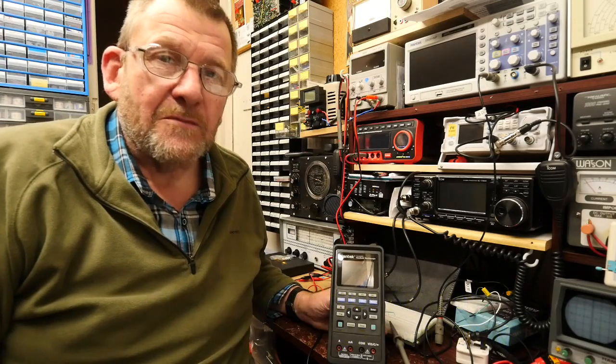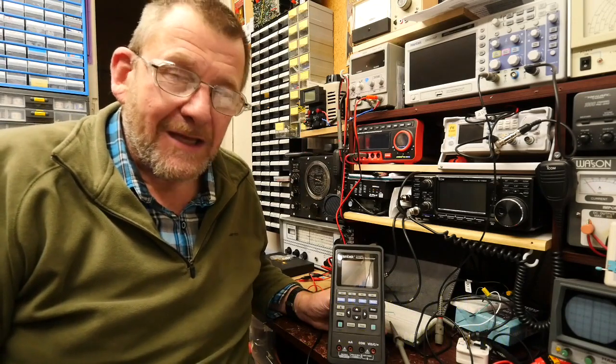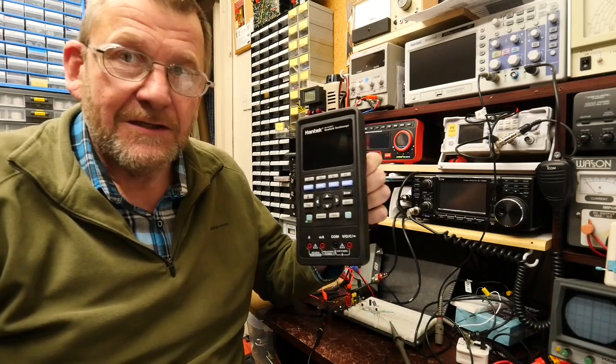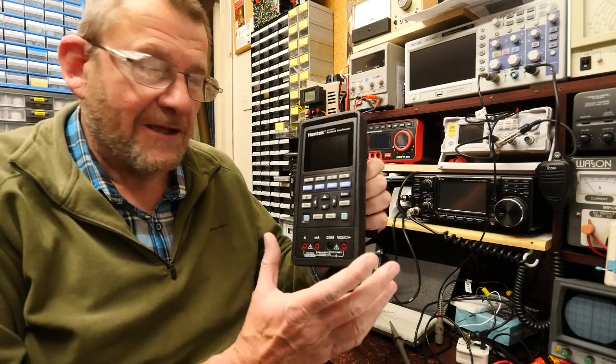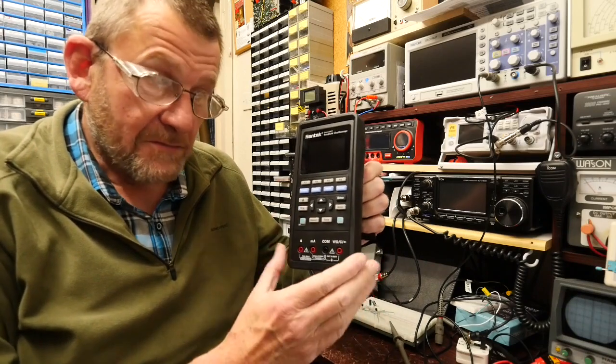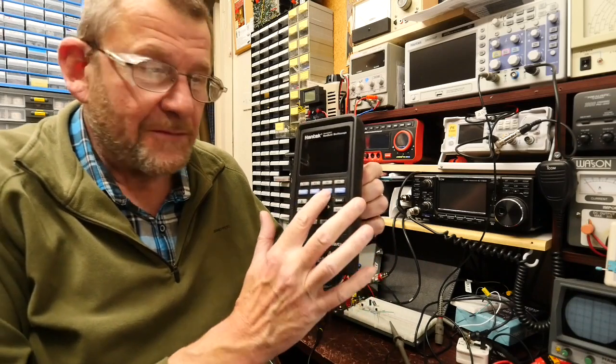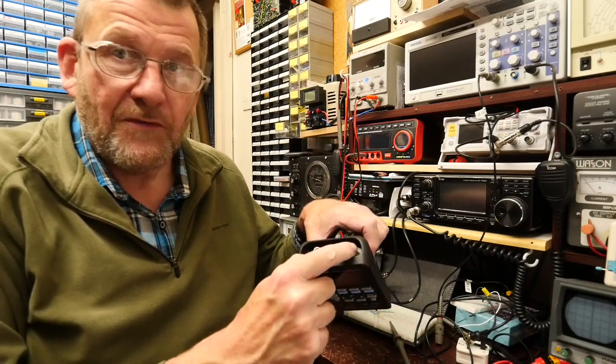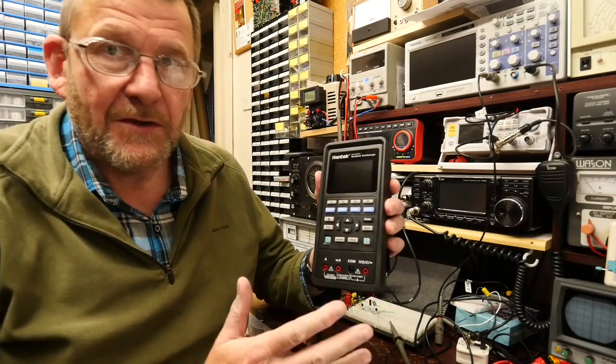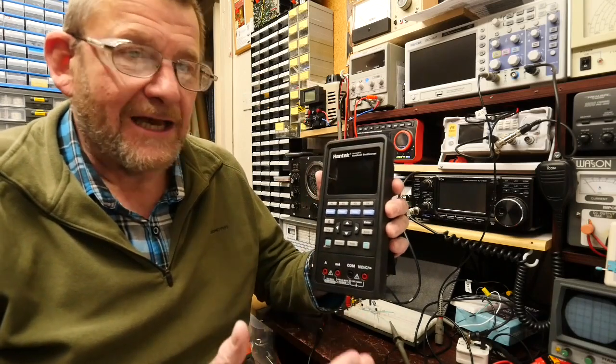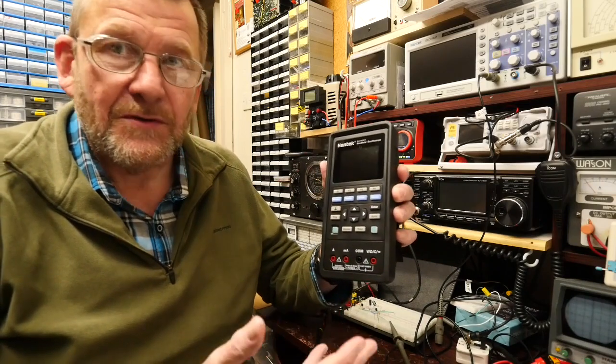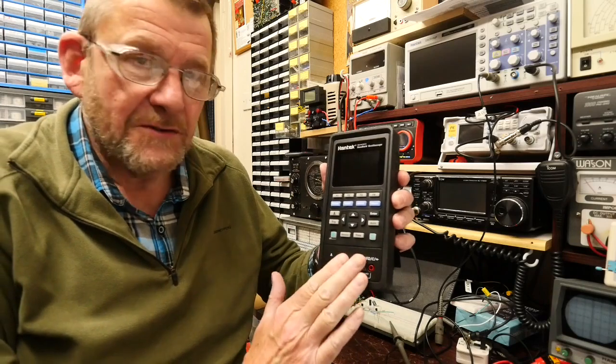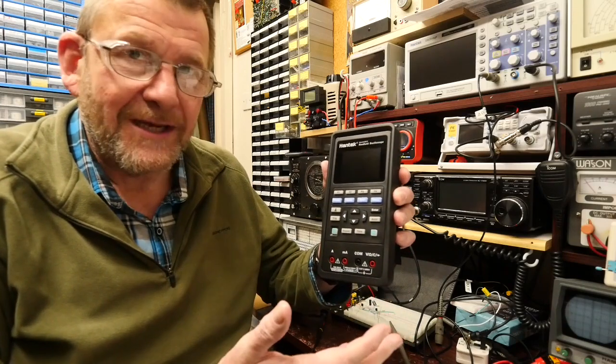Hello and welcome to another video from Lockdown Electronics with me Bill. This time we're going to be making use of the Hantec 2D72, which is a handheld oscilloscope, multimeter, and arbitrary wave generator. I'm going to try and perform a little experiment on a small circuit built on the breadboard and make full use of all the functions on the meter and see how we get on.